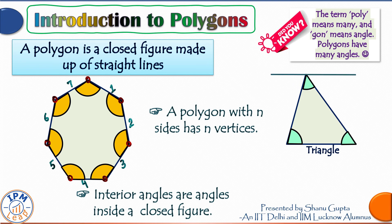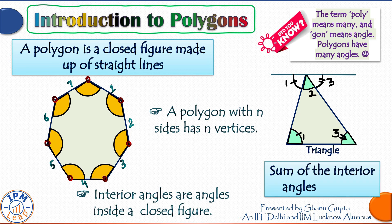This fact has a very simple and elegant proof. All you need to do is draw a line through the vertex which is parallel to the base. This angle and this angle are equal because they are alternate interior angles, and so are these two. Since angles on a straight line always add up to 180 degrees, that proves that the sum of interior angles of a triangle is 180 degrees. This triangle sum is the only fact that you need to know for other polygons.